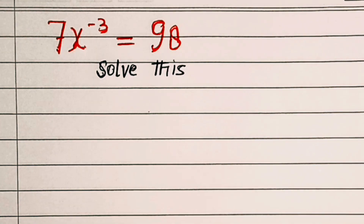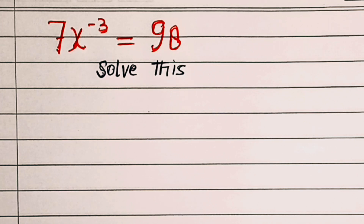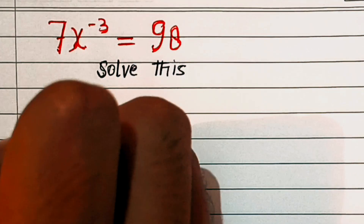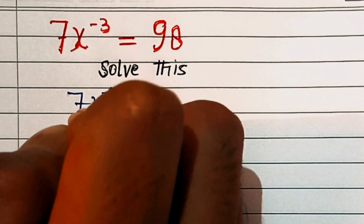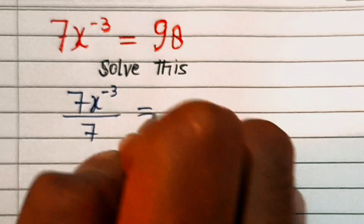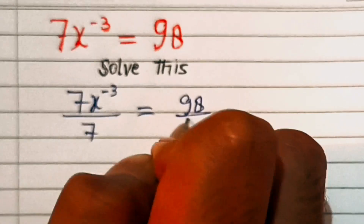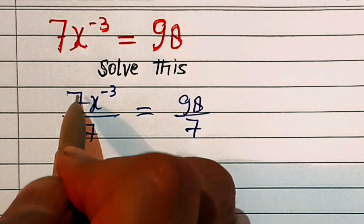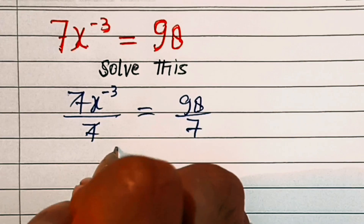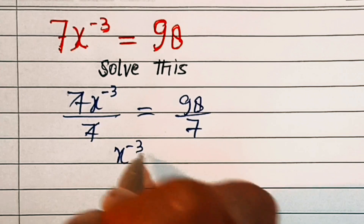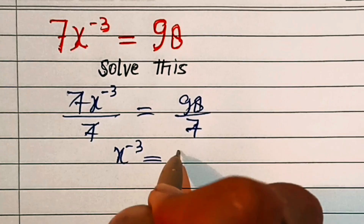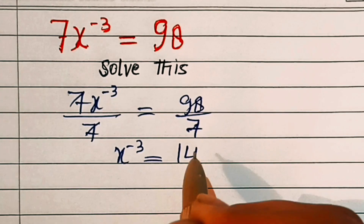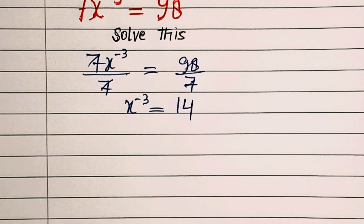Hello friends, let us solve this beautiful equation with a negative exponent: 7x to the power minus 3 equal to 98. In the first step, we will divide 7 on both sides. So this will look like 7x power minus 3 divided by 7 equal to 98 divided by 7. This 7 and this 7 will get cancelled out, so this is x power minus 3 equal to 14.